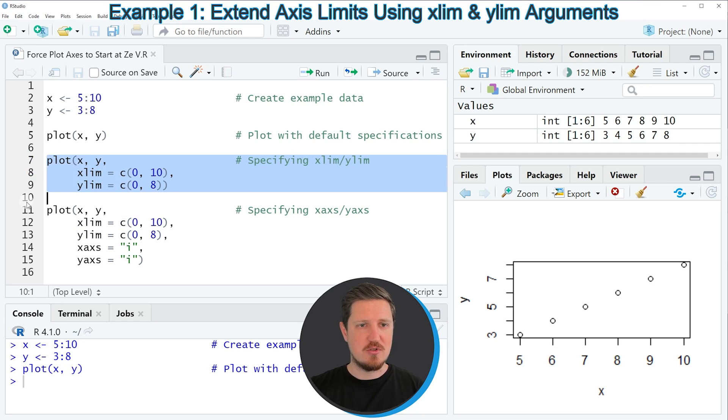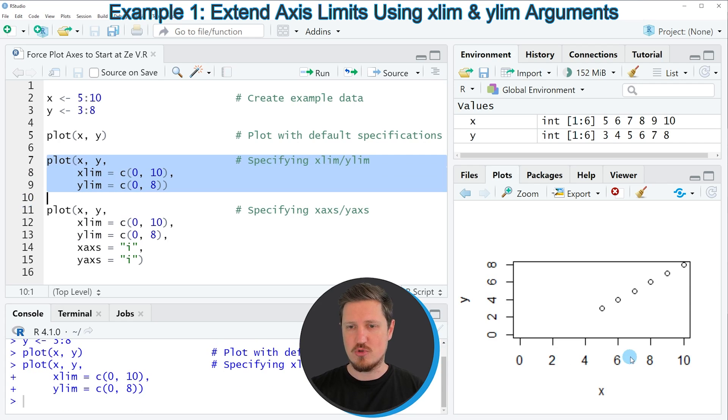If you run lines 7 to 9 of the code you can see at the bottom right that our plot is updated and this time the X and Y axis ranges start at 0. However you can also see that at the bottom left there is a small corner which is a bit lower than 0.